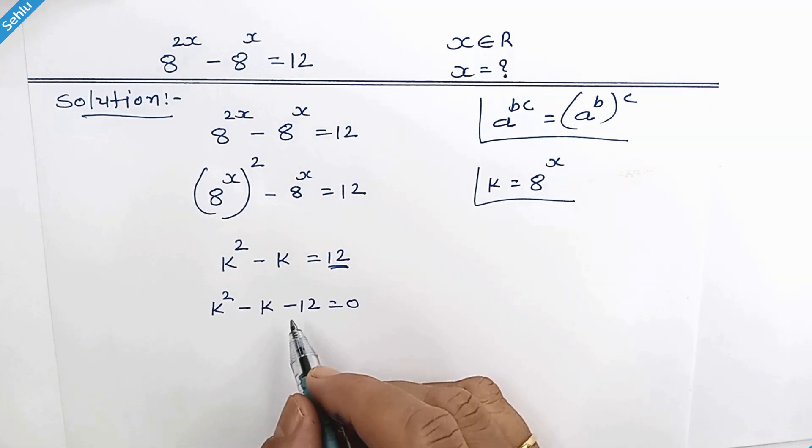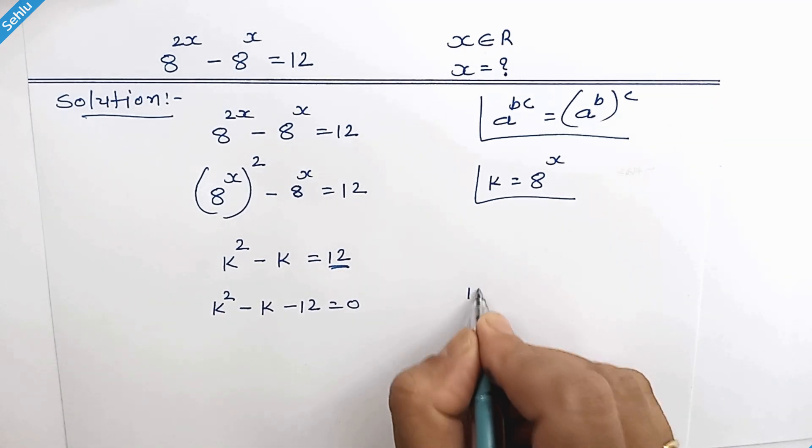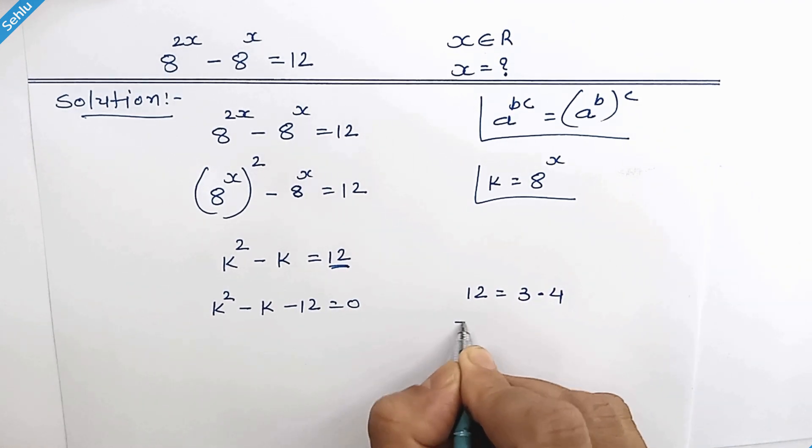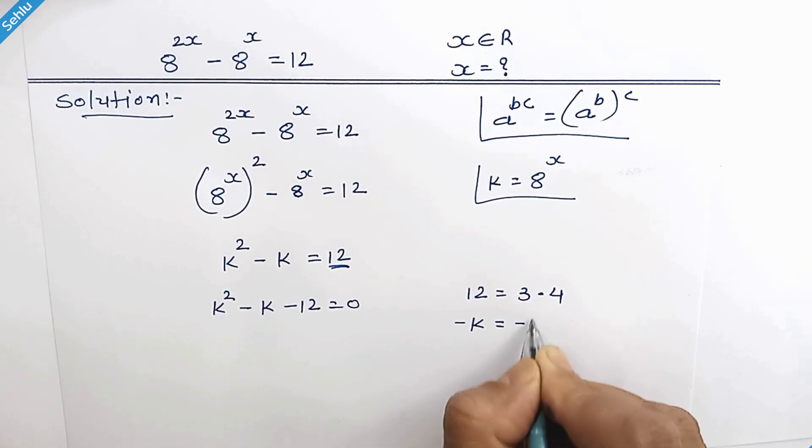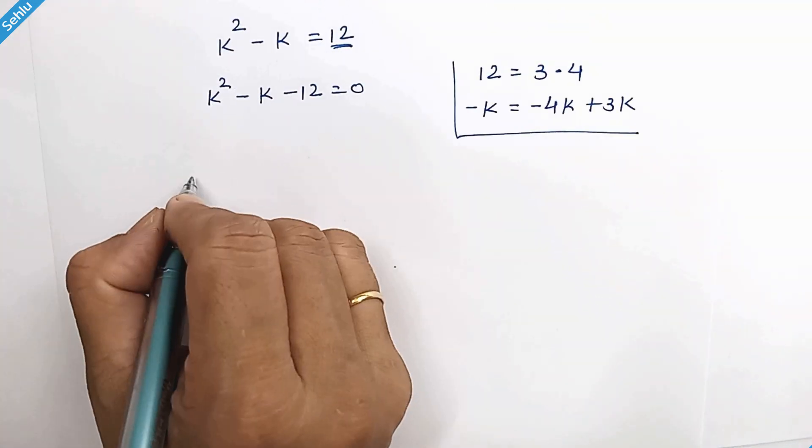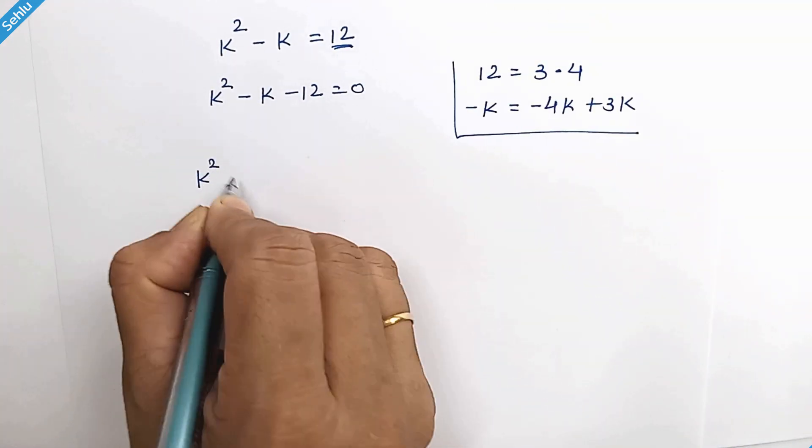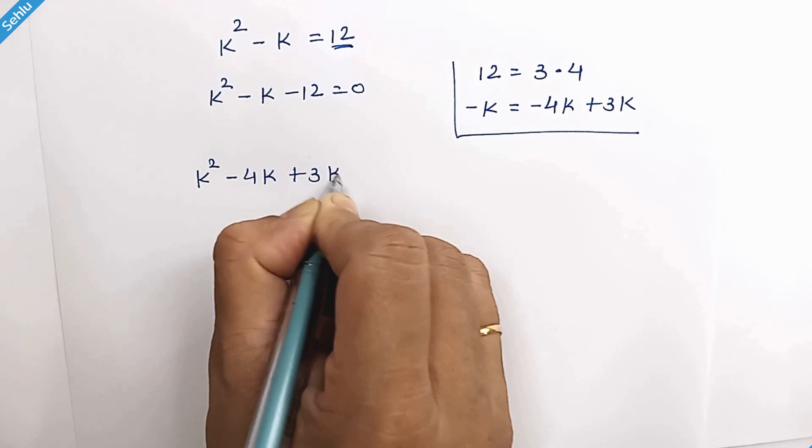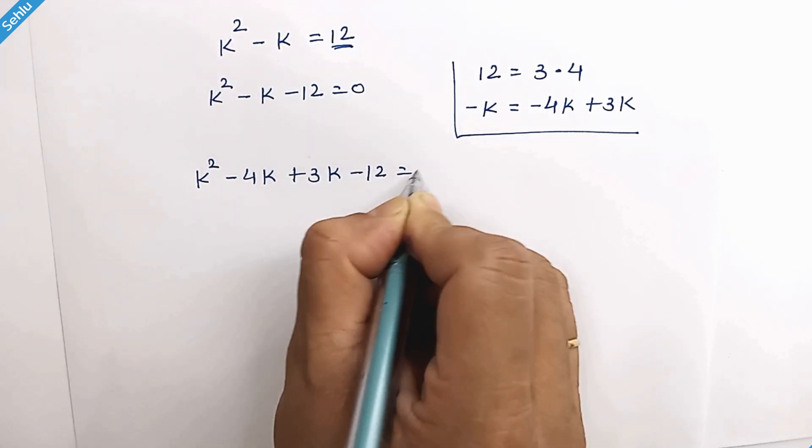We can factorize this quadratic equation. 12 is 3 times 4 and negative k can be written as negative 4k plus 3k. So our equation will be k square minus 4k plus 3k minus 12 is equal to 0.